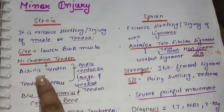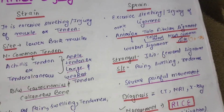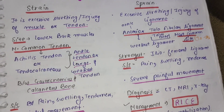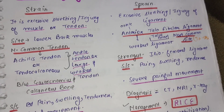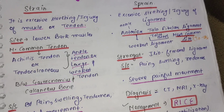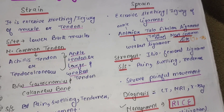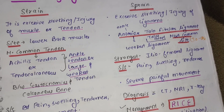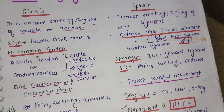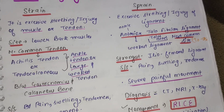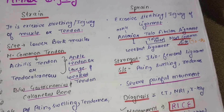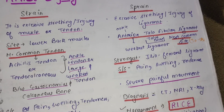Strain के अंदर जो most common tendon involve होता है वो है Achilles tendon, जिसको tendocalcaneus भी कहते हैं. यह gastrocnemius muscle and calcaneus bone के बीच में present होता है. यह ankle का tendon होता है और large and weakest tendon होता है. इसलिए यह most common tendon होता है जो strain में involve हो सकता है.